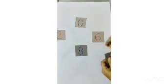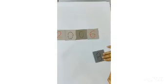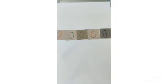2, 0, 0, 6, 8. So our smallest 5 digit number is 20,068.